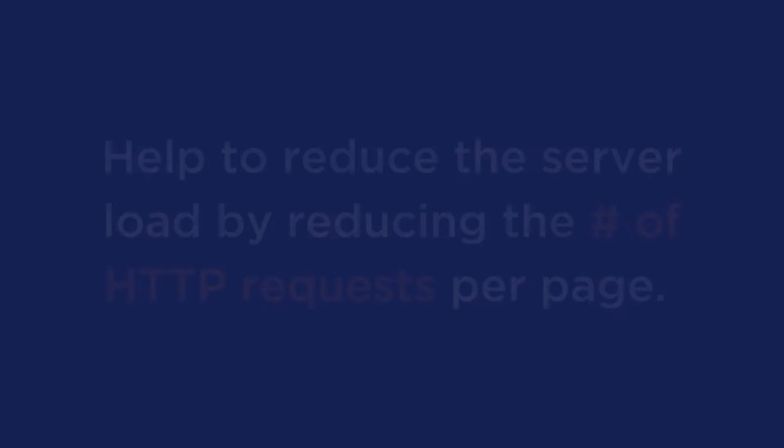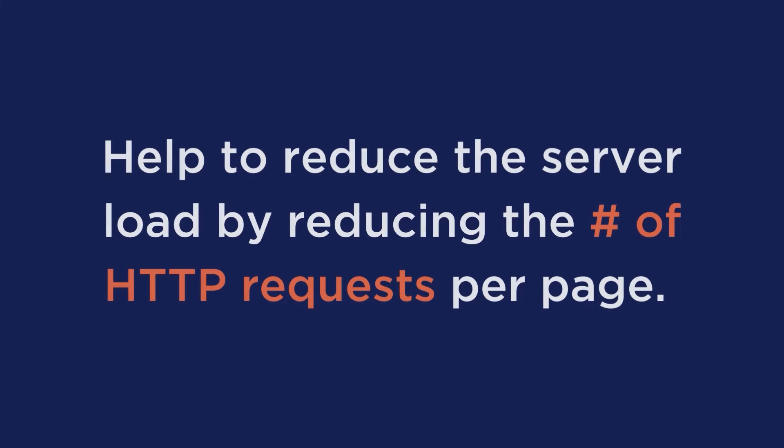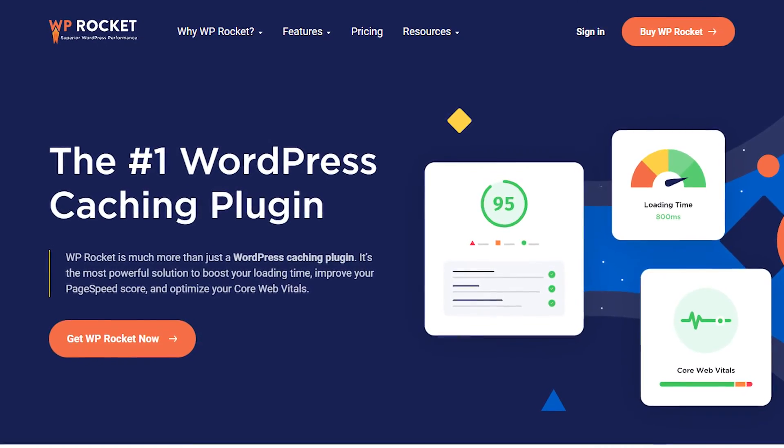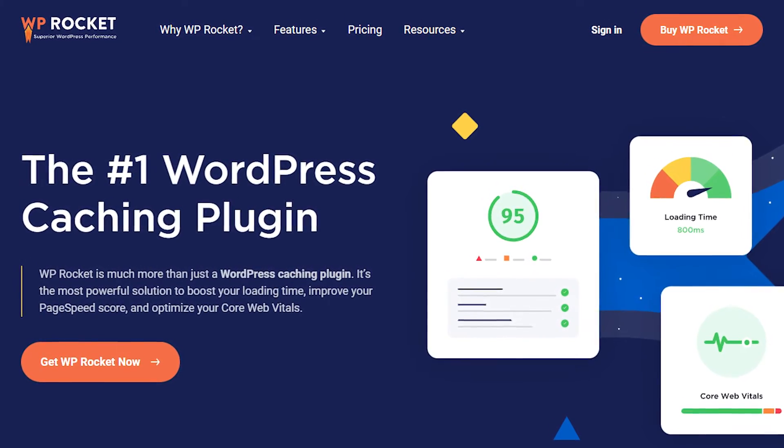Technique six: enable browser caching. Caching is another Google recommendation for page speed because it allows images to be served faster to users. Browser caching helps reduce server load by reducing the number of HTTP requests per page. Google suggests using a WordPress plugin for caching, and one of the best is WP Rocket — it automatically applies 80% of web performance best practices with a simple interface and quick setup.